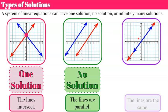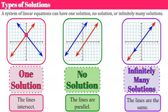The third kind is infinitely many solutions. It's when the lines are the same. When you graph both equations, they are what we call coinciding lines — one is right on top of the other. They are the same line, probably given in a system written in two different ways. Every point on the line is a true solution to both, so there are infinitely many solutions since a line is made up of an infinite number of points.